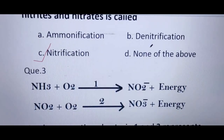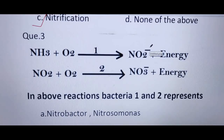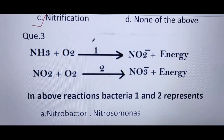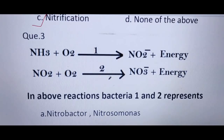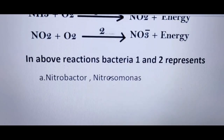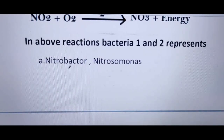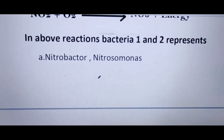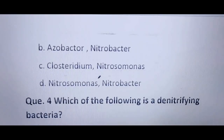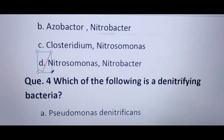Next question: two reactions are given where ammonia is converted into nitrite first, and then into nitrates. We need to name bacteria 1 and bacteria 2. Bacteria 1 is Nitrosomonas and bacteria 2 is Nitrobacter. The first option is incorrect because the sequence of both bacteria is reversed. Our correct answer is option D — Nitrosomonas and Nitrobacter respectively.